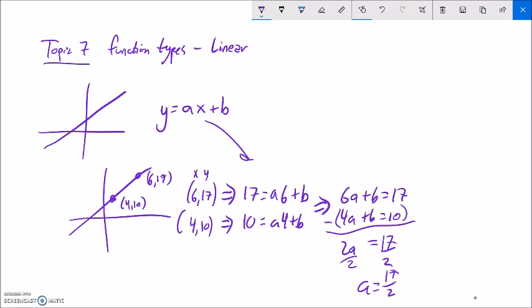Great. And if I know what a is, I'm going to plug it back into any of the equations to get the b value. I'll just plug it into here. So 10 equals 17 halves times 4 plus b. And if I do 17 halves times 4, I get 34. So 10 is equal to 34 plus b. Subtract that 34, and I get a negative 24. So b is negative 24.